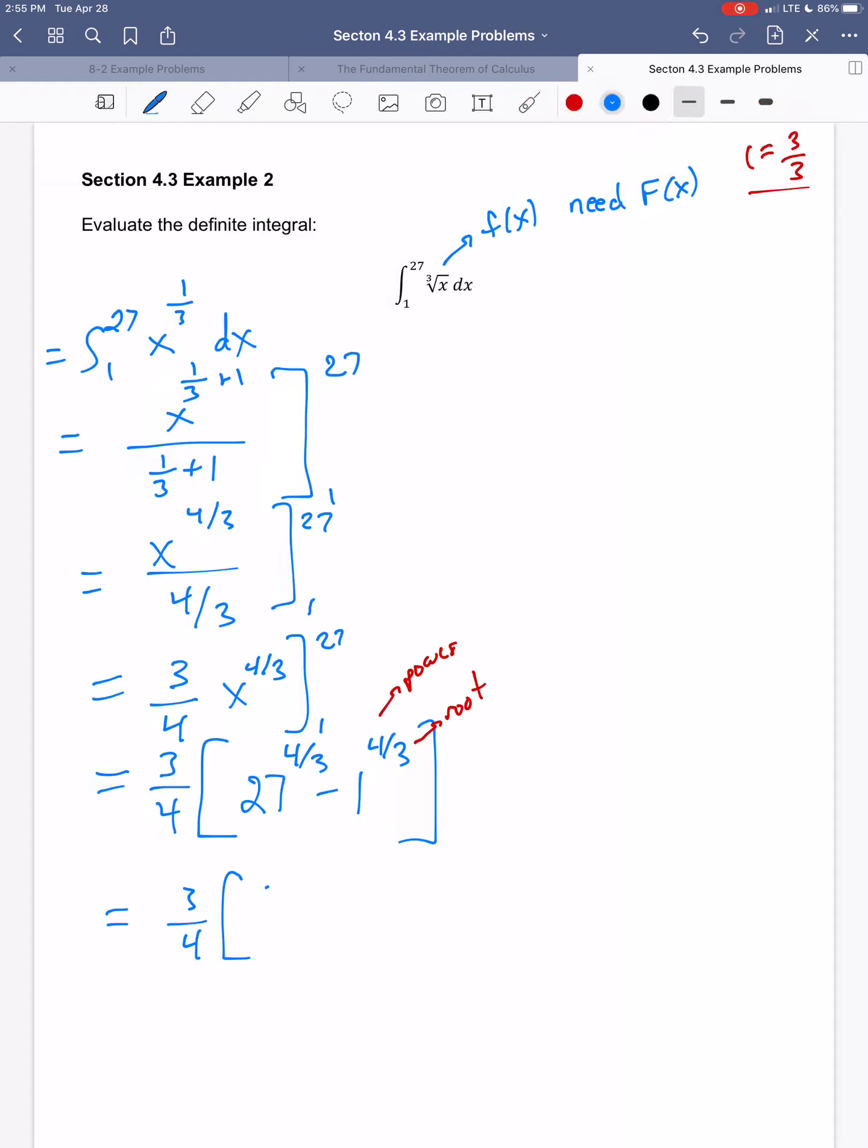So I'm going to have the cube root of 27 to the fourth power and then the cube root of 1 to the fourth power. The three-fourths is still there.